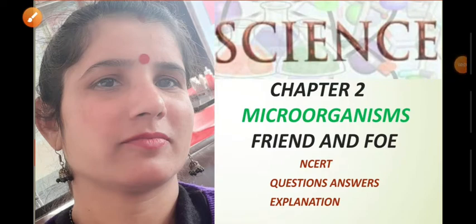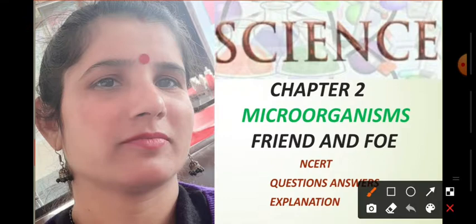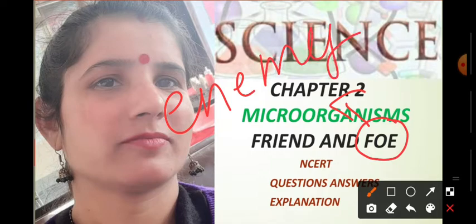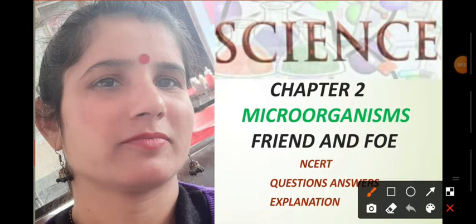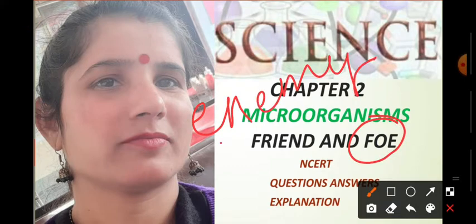Hello students, today we are going to start chapter number second for class 8th. Today we will discuss the question answer of the same chapter. The chapter name is microorganisms friend and foe. First of all, what is the meaning of foe? Foe means enemy.